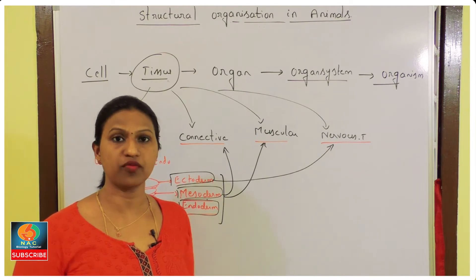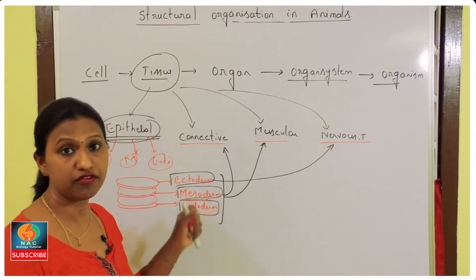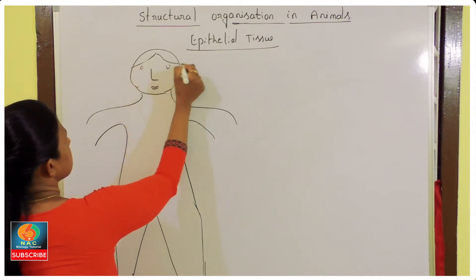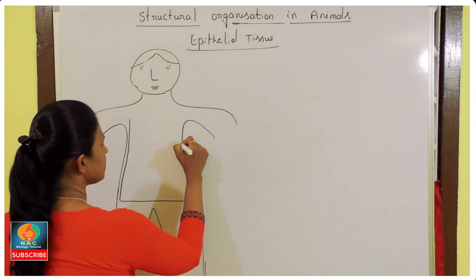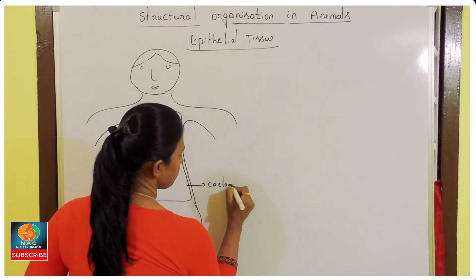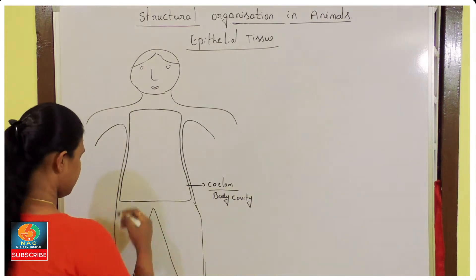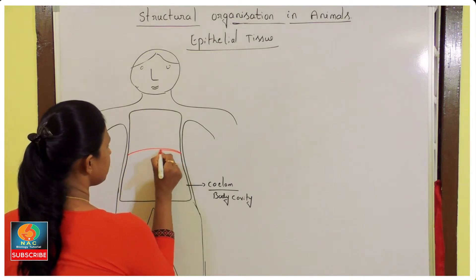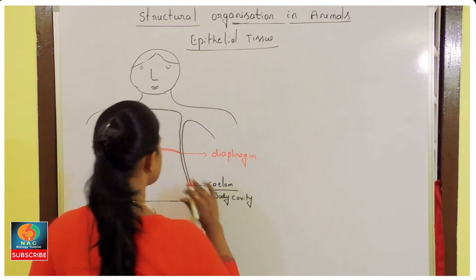I will draw the human body so we can easily locate where epithelial tissues are and how these layers are responsible for their formation. The human body has a cavity — the coelom or body cavity — which is divided into two parts by a muscular layer known as the diaphragm. The upper cavity is the thoracic cavity and the lower one is the abdominal cavity.